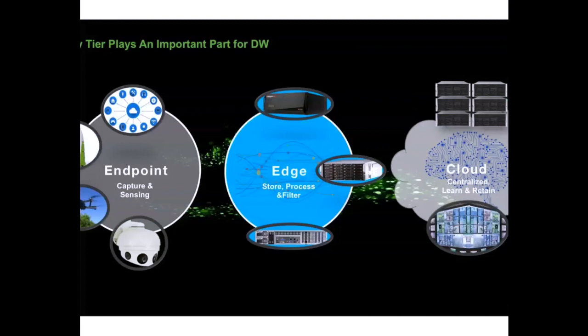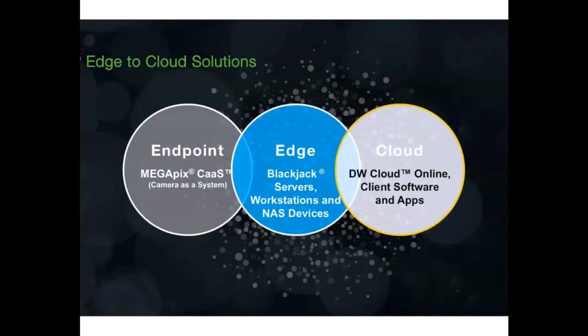At Digital Watchdog, we use Seagate Skyhawk surveillance drives in a lot of our products at the edge. We have solutions for the endpoint — capture and sensing with our panoramic cameras and single-image sensor cameras. We move into the edge with our Blackjack server devices. We also have a cloud component for cloud management of the edge solution, providing remote connectivity through a secure cloud connection. Our Megapix CAST system — camera as a system — is our endpoint product, and our Blackjack servers, workstations, and network-attached storage devices are our edge products, all including Skyhawk surveillance drives.